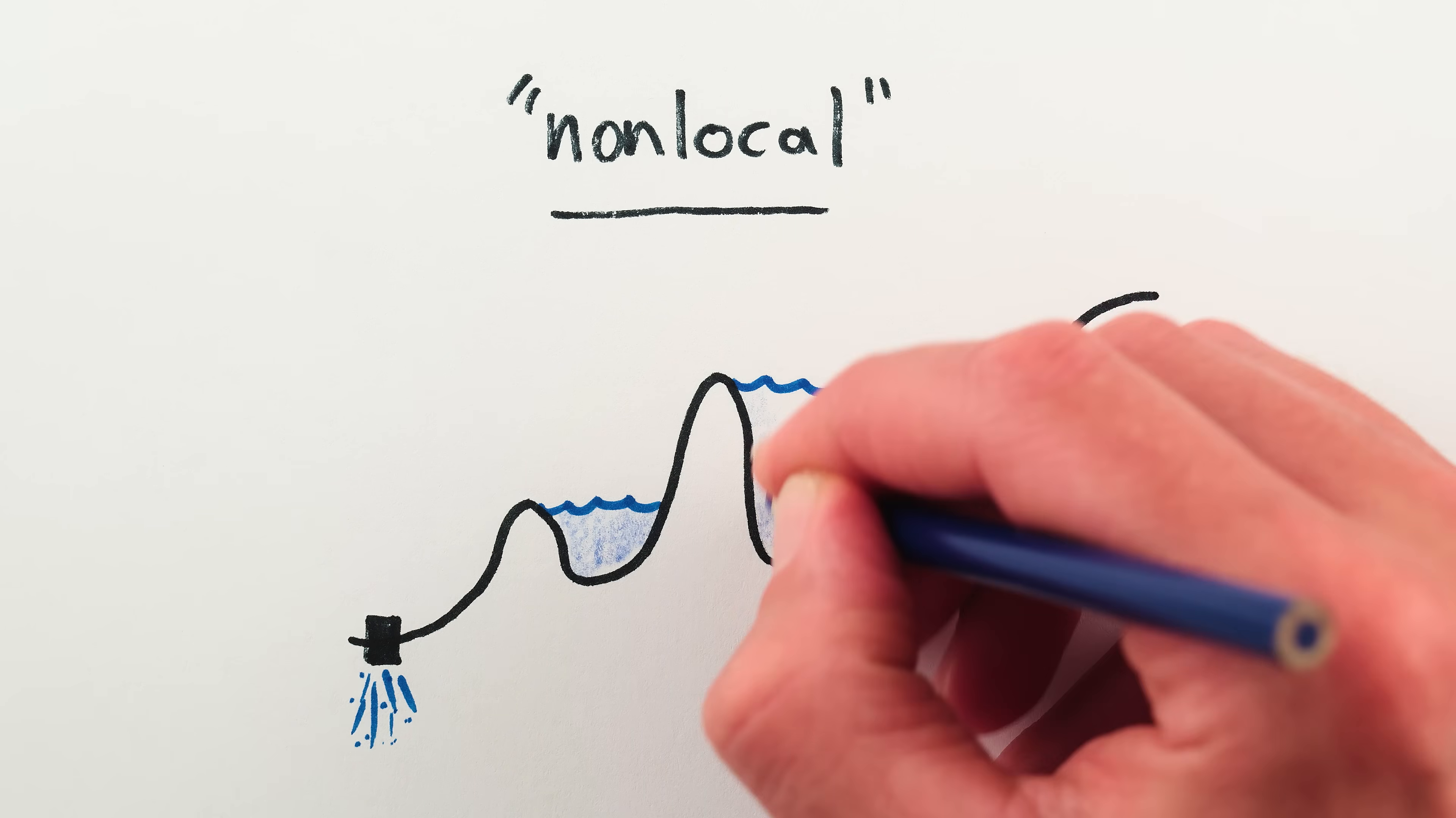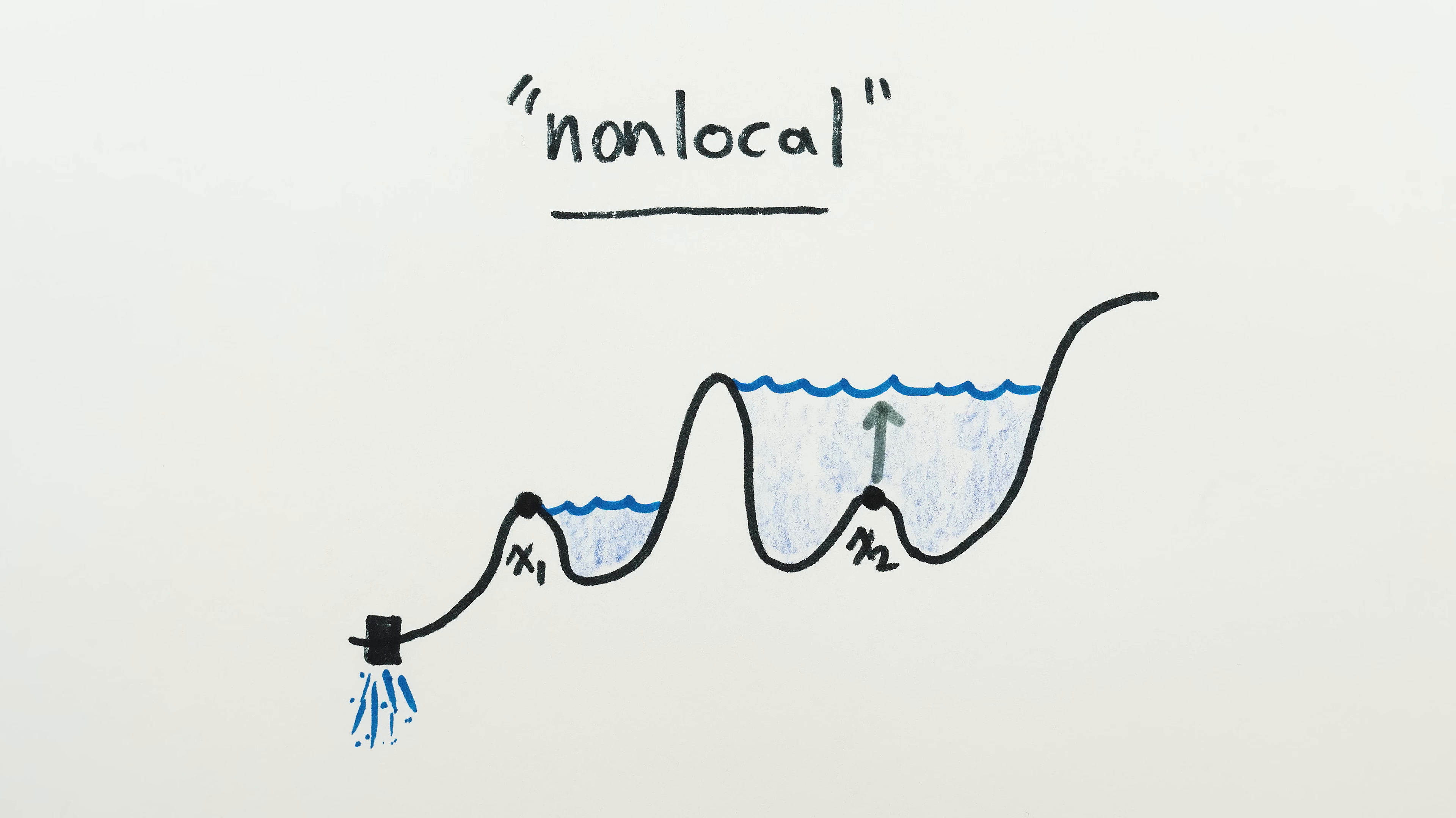We call this a non-local phenomenon, because what's happening at any given point depends not just on the situation at that point, but also what's going on elsewhere.